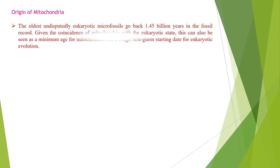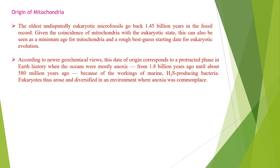In this slide, we will learn about the origin of mitochondria. The oldest undisputedly eukaryotic microfossils go back 1.45 billion years in the fossil record. Given the coincidence of mitochondria with the eukaryotic state, this can be seen as a minimum age for mitochondria and an Iraq-based starting date for eukaryotic evolution. According to newer geochemical views, this date corresponds to a phase in Earth history when the oceans were mostly anoxic from 1.8 billion years ago until about 580 million years ago, because of the workings of marine H2S-producing bacteria. Eukaryotes thus arose and diversified in an environment where anoxia was commonplace.